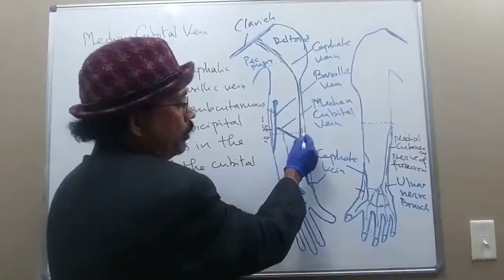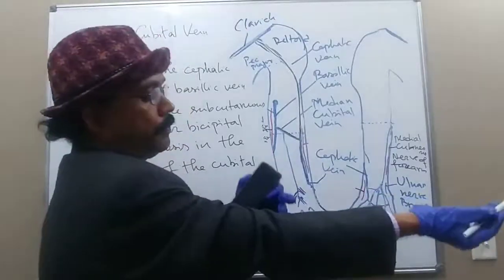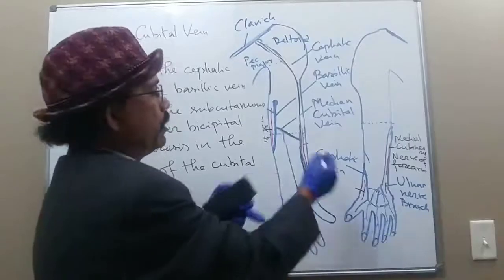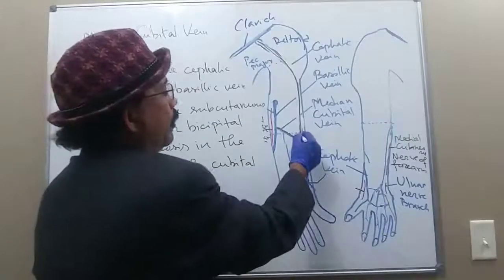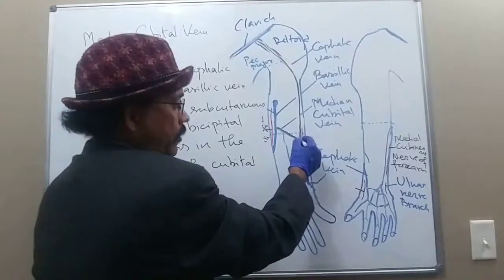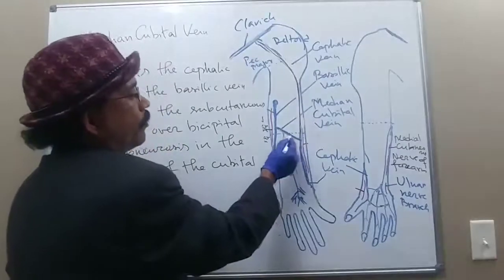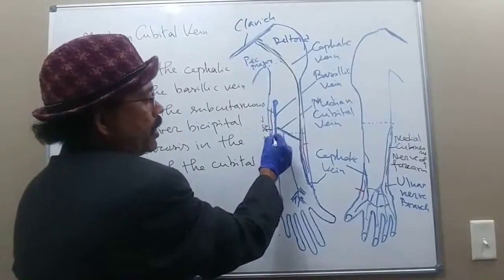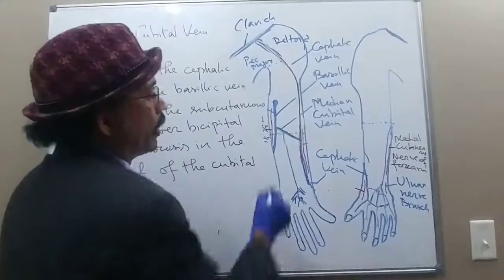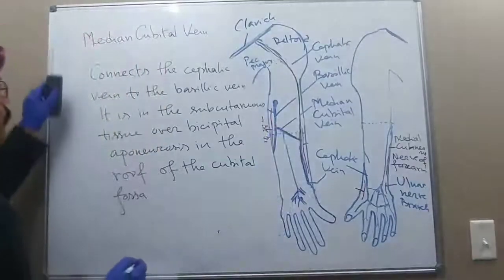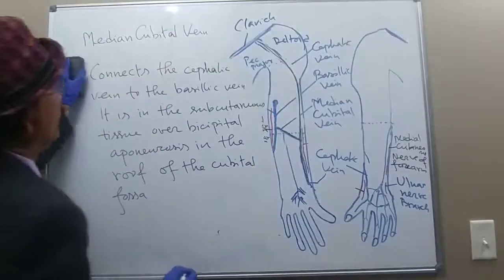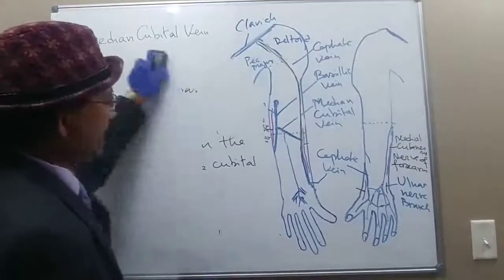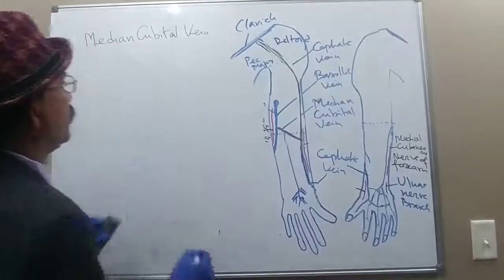Its course is variable, but usually the lower end is from just below the lateral side of the elbow. It runs obliquely from about 2.5 centimeters below the lateral side to 2.5 centimeters above the medial epicondyle of the humerus to connect the basilic vein.